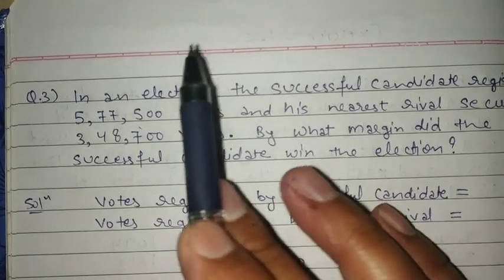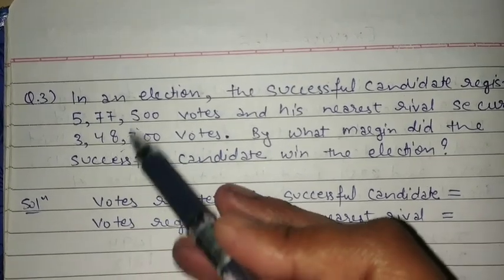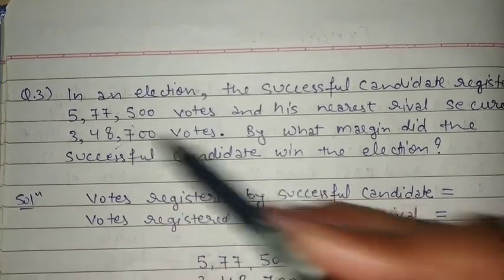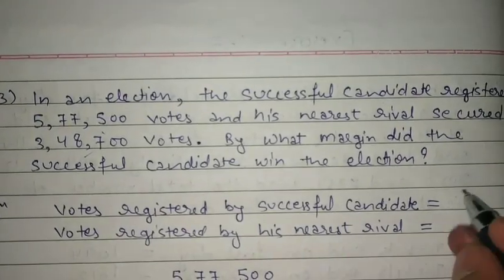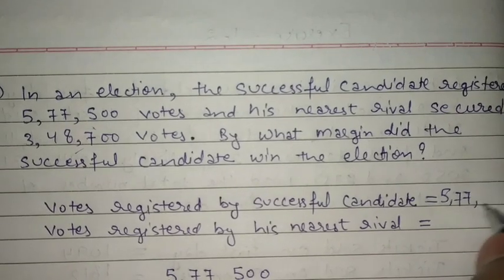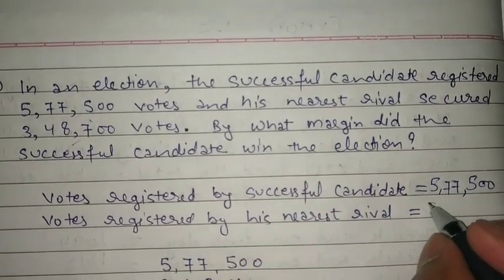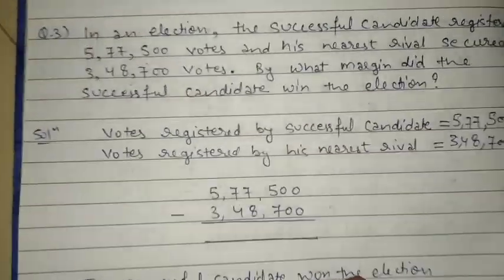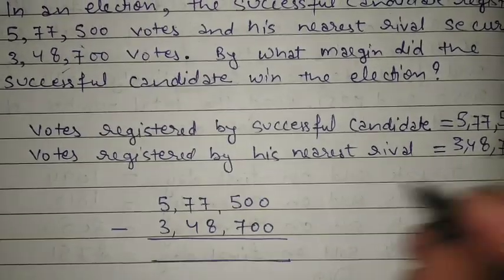Let's say Ram won the election with 5,77,500 votes and his rival Shiam got 3,48,700 votes. To find the margin, we need to find the difference between these two numbers, so we subtract.